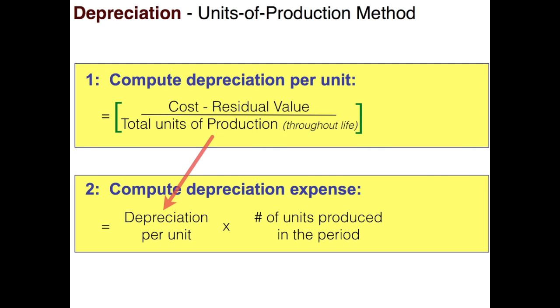So I'm going to take the depreciation per unit and multiply that times the number of units that are going to be produced that period. Now this method of depreciation is most useful for equipment that's producing units.